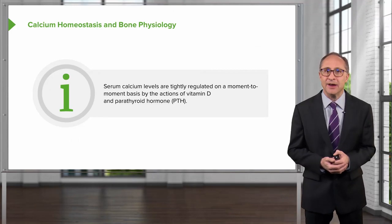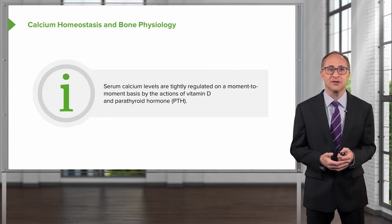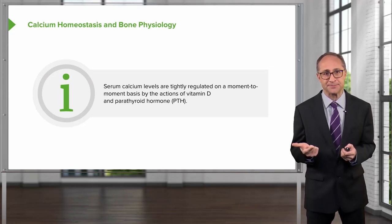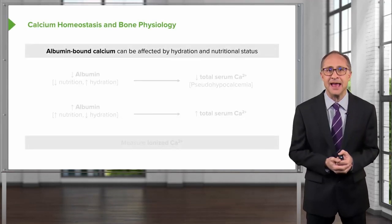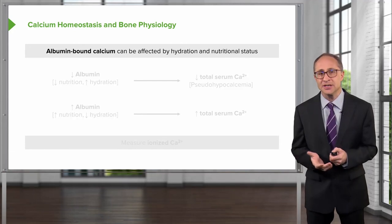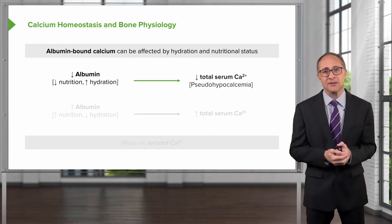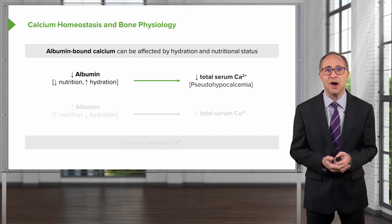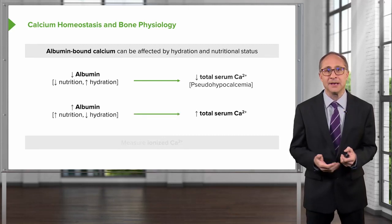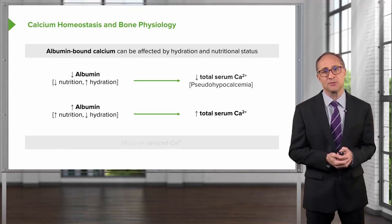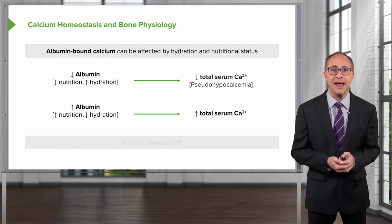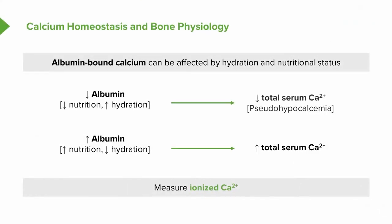Serum calcium levels are tightly regulated on a moment-to-moment basis by the actions of vitamin D and parathyroid hormone. The amount of calcium that is albumin bound can be affected by hydration and nutritional status. When albumin levels decrease, the total serum calcium levels may appear low — this is known as pseudo-hypocalcemia. When albumin levels increase, total serum calcium levels will appear elevated, known as pseudo-hypercalcemia. In both cases, by checking an ionized calcium level, you will see a normal level indicating normal circulating free levels of calcium.